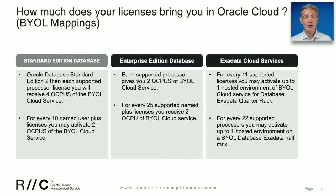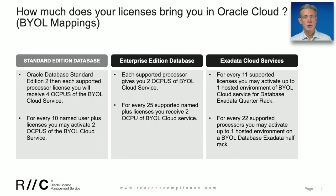Moving on to Enterprise Edition, for each processor you bring to cloud, you will receive two OCPUs, and for every 25 NUPs, you will also receive two OCPUs.